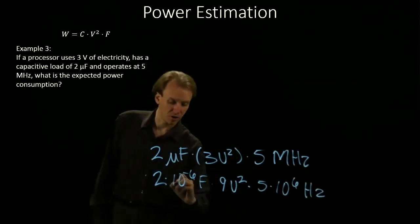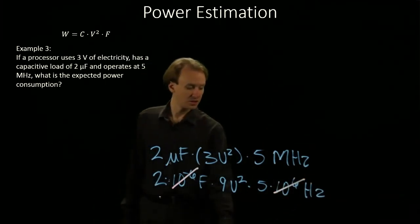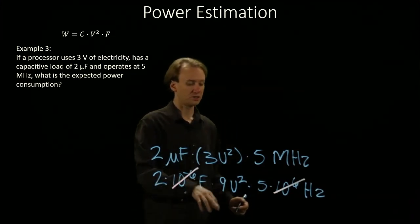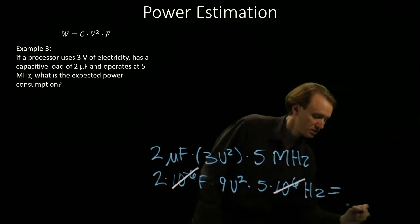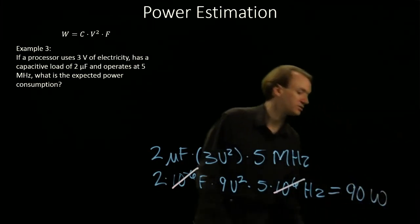As before our 10 to the minus sixth will cancel with our 10 to the sixth and we will get 2 times 9 is 18 times 5 equals 90 watts of power.